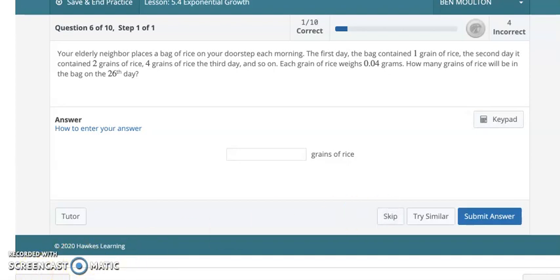All right, this one is pretty wild if you don't know what to look for. If you click on Tutor, it'll give you an example, and I'll do something similar. But let's see if I can shed some light on what's happening here. So this is question seven. Your elderly neighbor places a bag of rice on your doorstep each morning. The first day, the bag contained one grain of rice, not very much. And on the second day, two grains of rice. The next day is four grains of rice, so you're like doubling each time. And then each grain of rice weighs 0.04 grams. So that's actually irrelevant information, this whole weight thing. Although there is a future problem where that will be relevant.